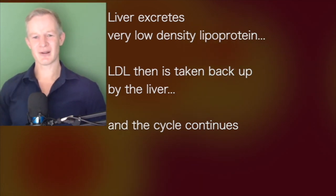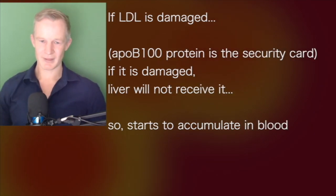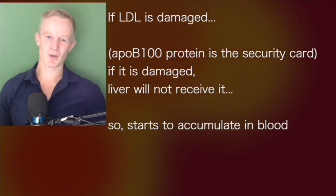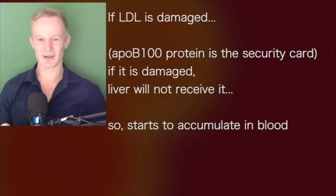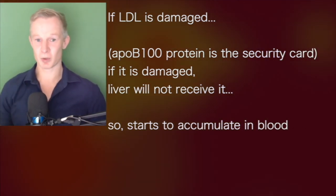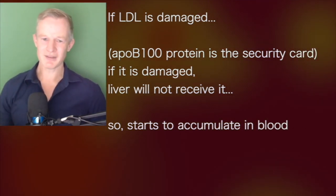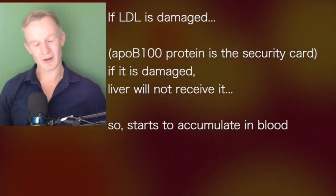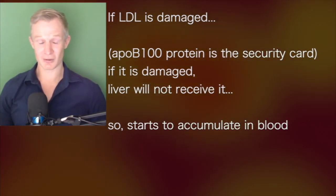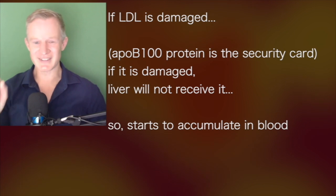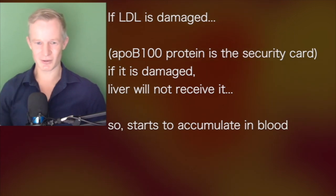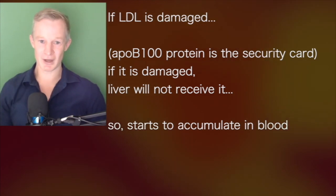Now, if the LDL is damaged, the pathway by which the liver takes it back up out of circulation stops working. Basically, there's one molecule on the outside of the LDL particle that identifies it — it's called an APO-B100.